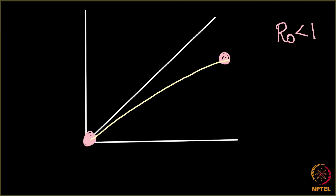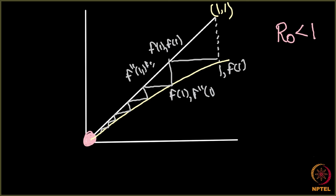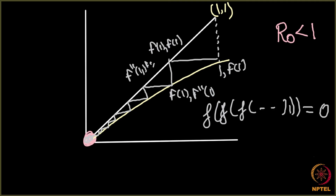Now I can repeat the same procedure. This point here is (1, 1). I again drop vertically and I get (1, f(1)). Then I go horizontally and get (f(1), f(1)). Then I come here and get (f(1), f(f(1))). Then I go here and get (f(f(1)), f(f(1))). I keep doing this. Where is the curve going to converge? It is definitely at 0. So when you do it infinite times, the curve converges at 0. In this case, f(f(f(...(1)...))) turns out to be 0, which means q* equals 0. Thank you.